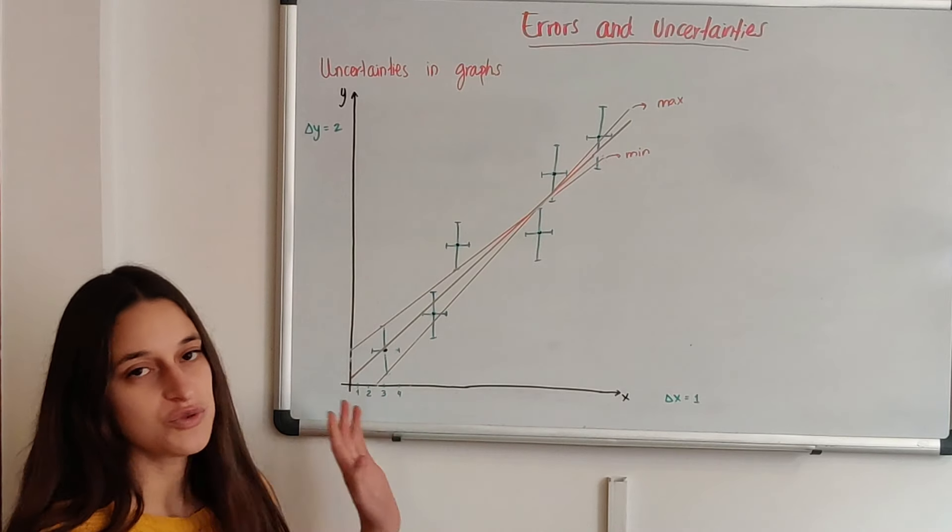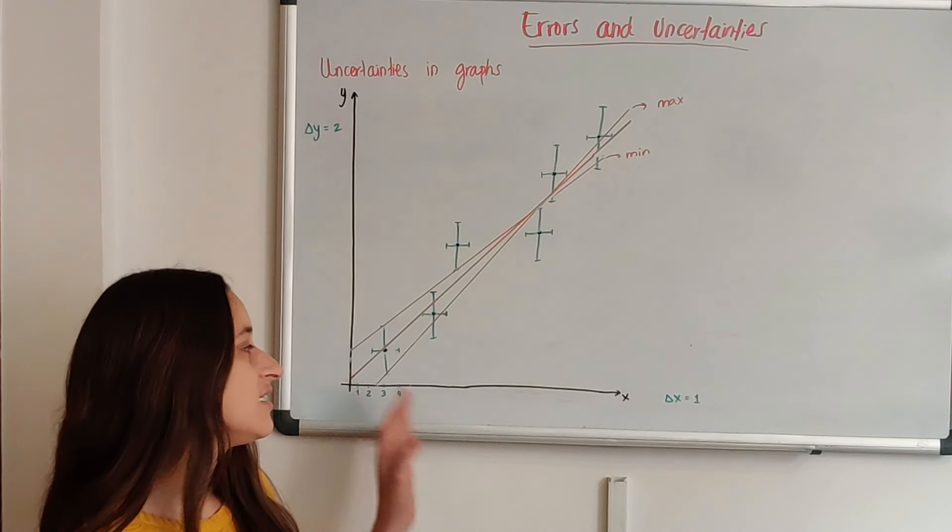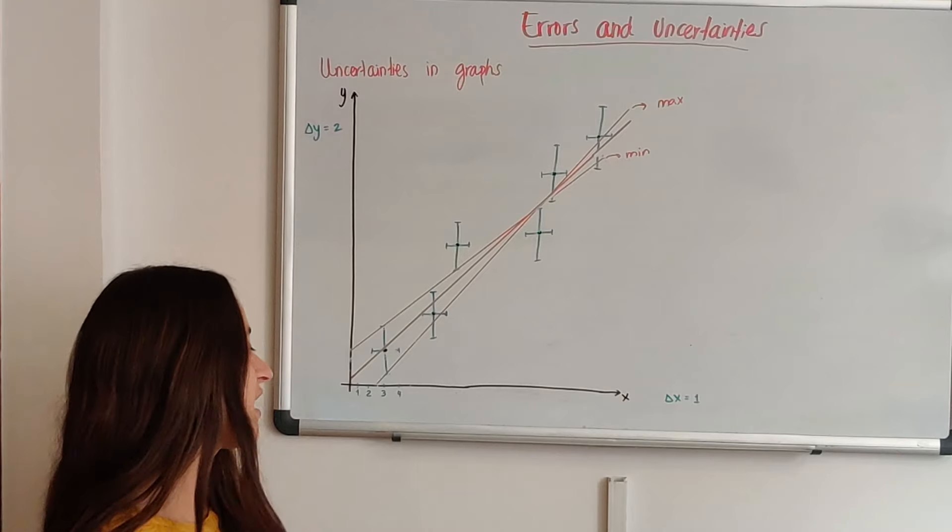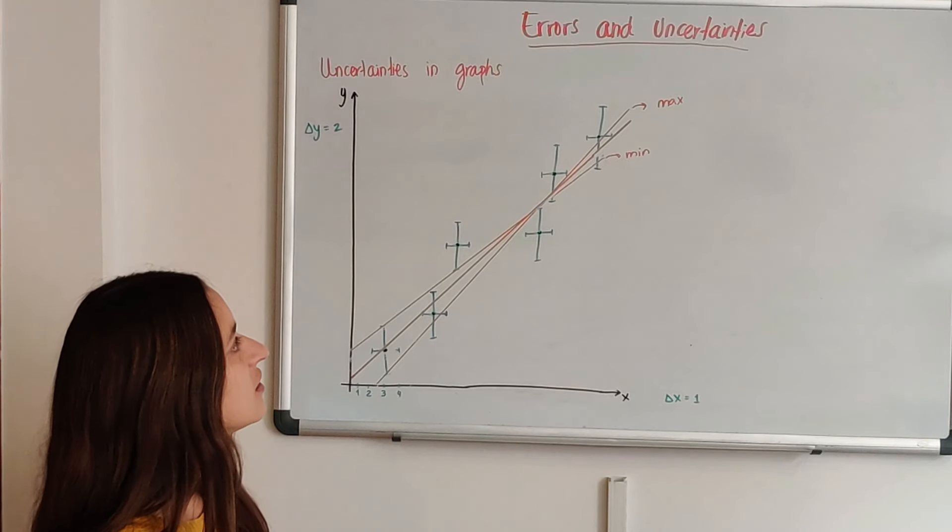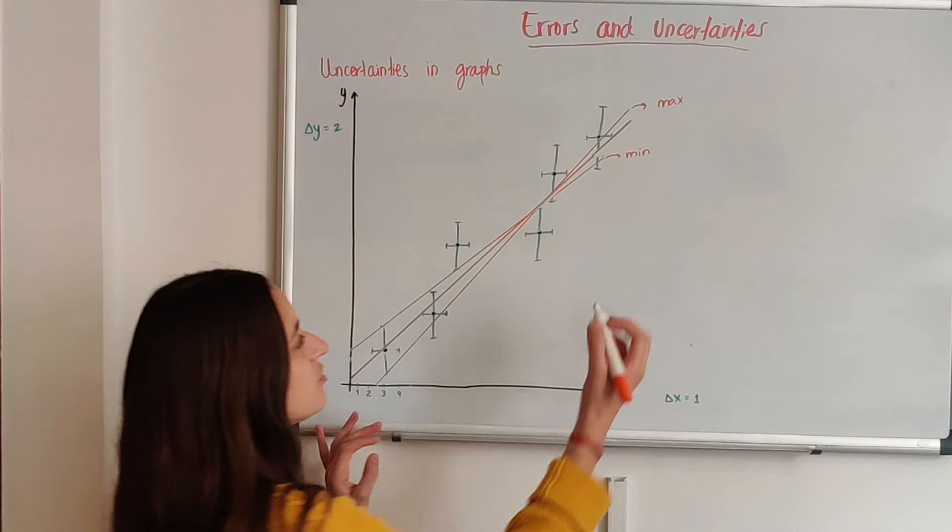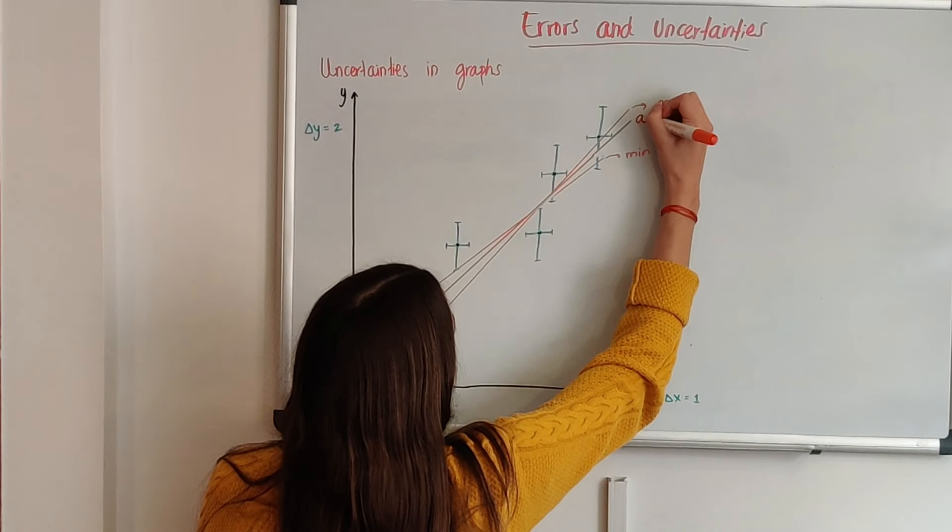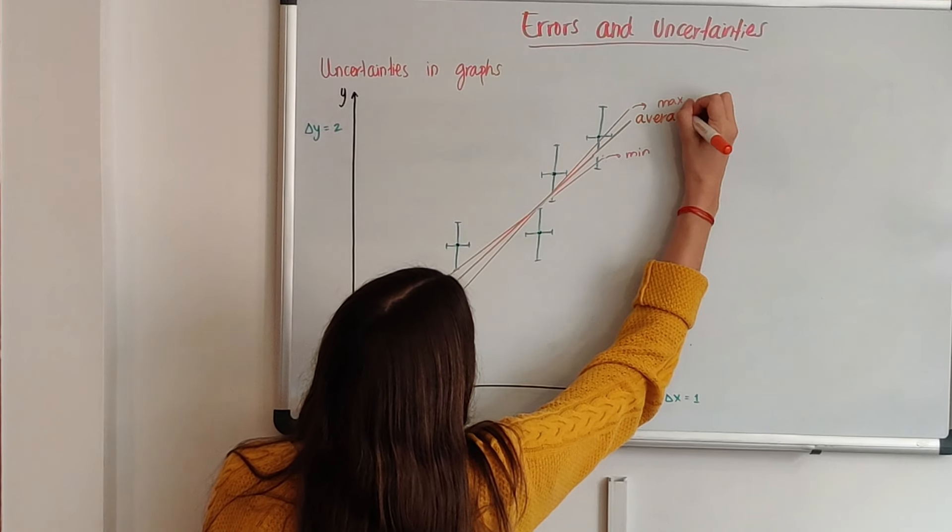We would have to find a physical explanation of why it would or wouldn't pass through the origin to see if that is consistent with our experiment or not. But since we don't have a physical background, then it doesn't have to pass through the origin. That would be a fine line of best fit.